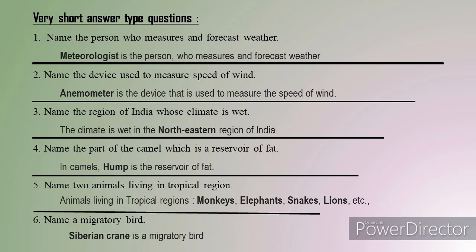Third question: name the region of India whose climate is wet. The region that is wet in India is the north-eastern region — for example, Assam. Fourth question: name the part of the camel which is a reservoir of fat. The reservoir of fat is the hump. The hump is not a reservoir of water — it is a reservoir of fat. Water is stored in the blood of camels, whereas fat is stored in the hump.